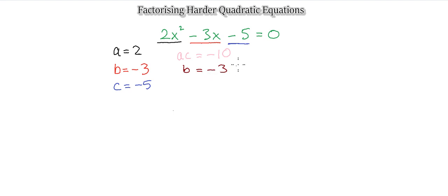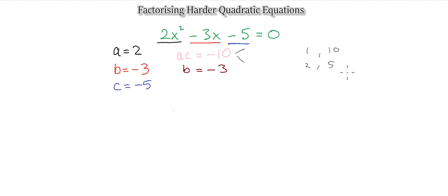We'll look at the factors going into 10. Factors of 10: we can have 1 and 10, or 2 and 5. Those are the two factor pairs that give us 10. We also need them to add to give us 3. 1 and 10 doesn't work, but 5 and 2 does. So we know our numbers would be 2 and 5.